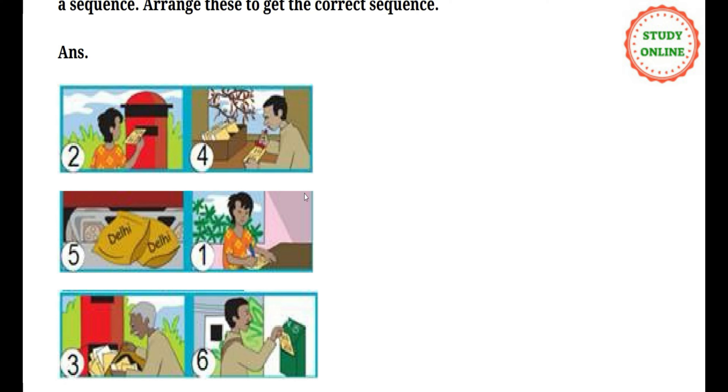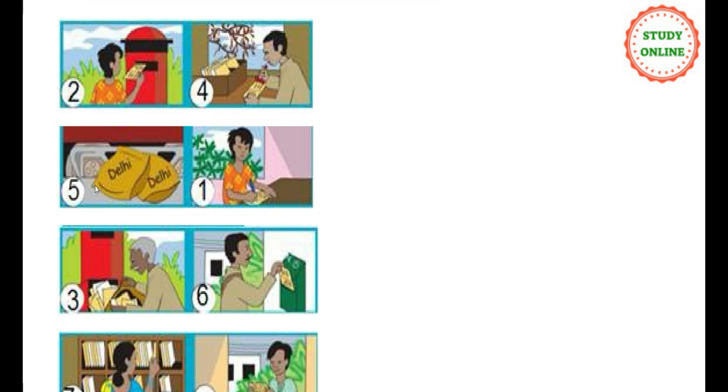First, the letter writer would have written the letter, then gone and put it in the post box. Then the postman would have opened that post box and taken all the letters. Then a stamp would have been put at the post office indicating where it will go, then it gets packed. Sorting is done — the packet for Delhi is kept with Delhi packets, and separate packets are made for different places.